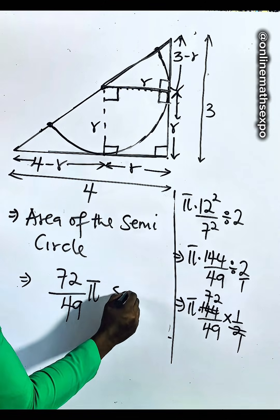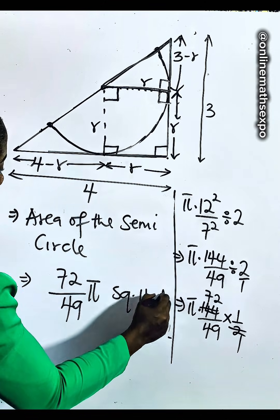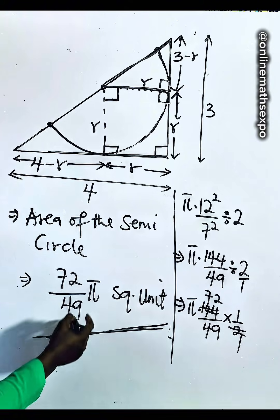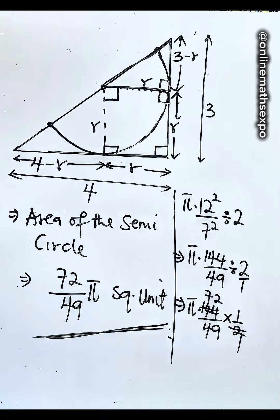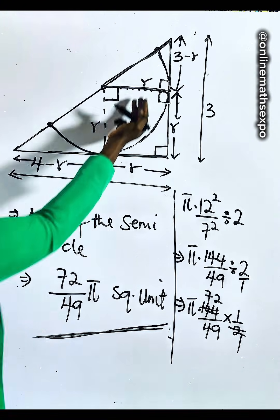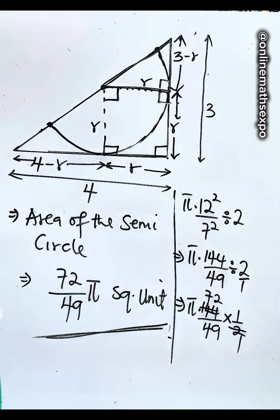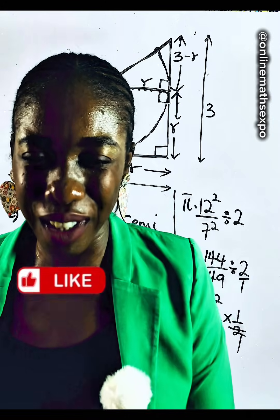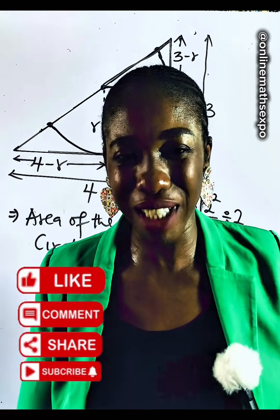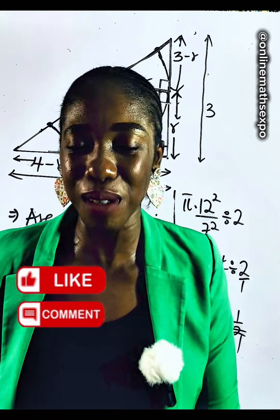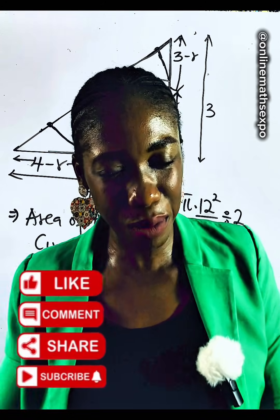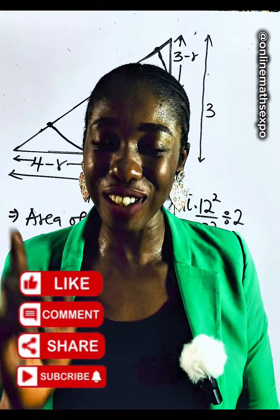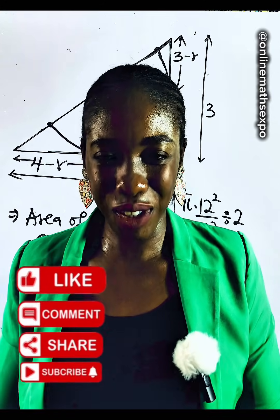That gives us the area in square units — this is the area of this particular semicircle. I hope you really learned something. I will also be curious to see your own method. If this helps, don't forget to share with others, give this a thumbs up, and if you are still new, hit that subscription button.